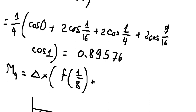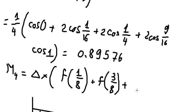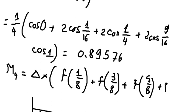So the next midpoint is f of 3 over 8. The next one is f of 5 over 8. And the next one is f of 7 over 8.